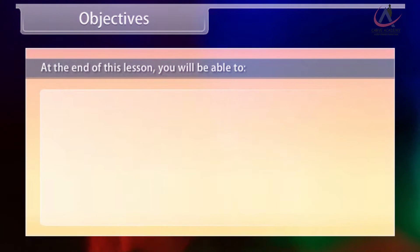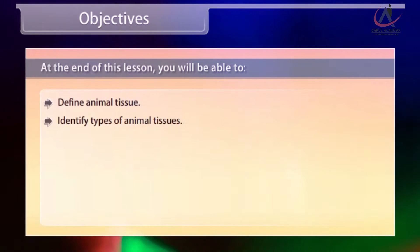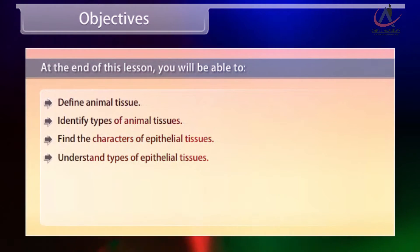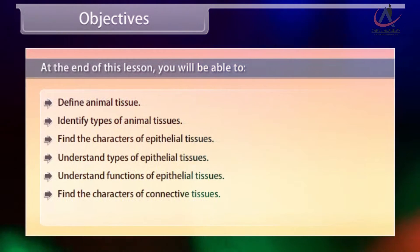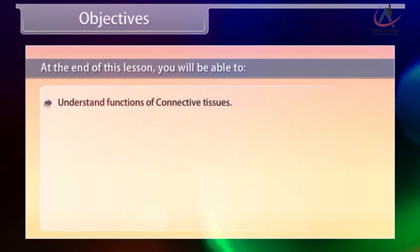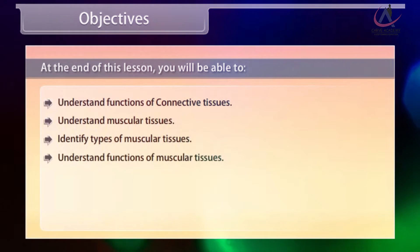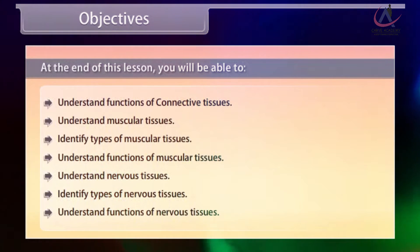At the end of this lesson, you will be able to: define animal tissue; identify types of animal tissues; find the characters of epithelial tissues; understand types and functions of epithelial tissues; find the characters of connective tissues; understand types and functions of connective tissues; understand muscular tissues and identify their types and functions; understand nervous tissues and identify their types and functions.